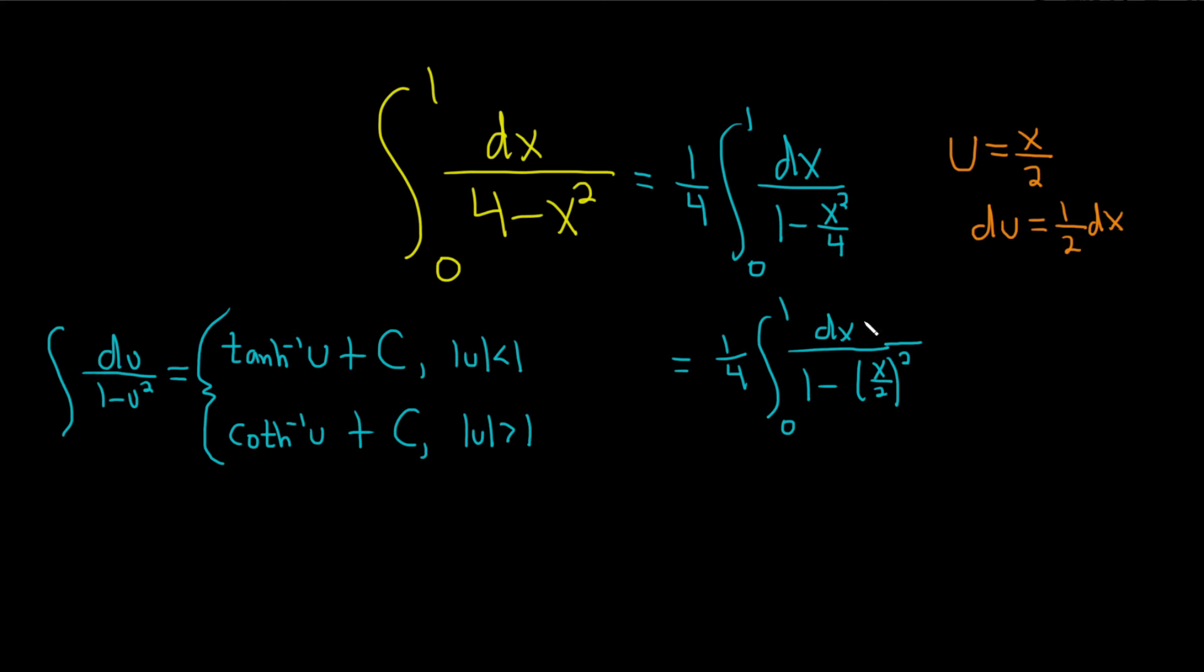Then you have to make this look like what's in your integrand. There's not really a 1 half there, so multiply both sides by 2. So we have 2 du equals dx.